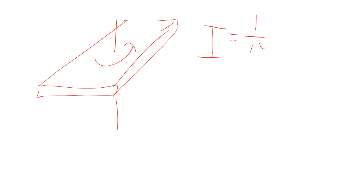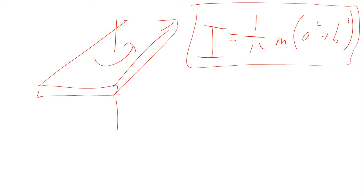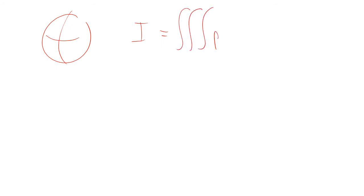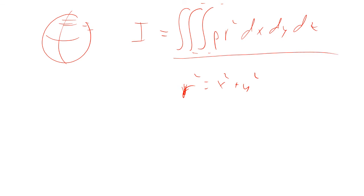So what we just calculated was that for this rectangular block rotating around its center of mass, i is one twelfth mass times a squared plus b squared. Now, what about other shapes? Suppose you had a sphere and you want to find i there. It's going to be the same integral of rho r squared dx dy dz, where r squared equals x squared plus y squared. The problem is this is not a rectangular object, so at different z's the limits on x and y change. That makes this a substantially more complicated integral.